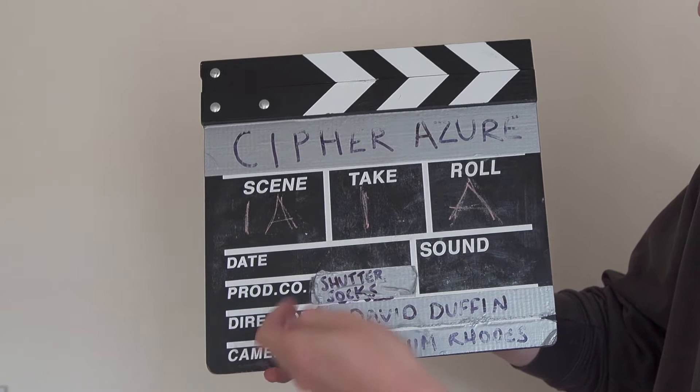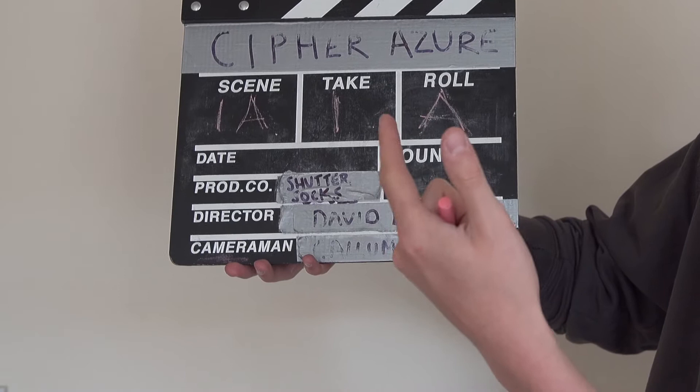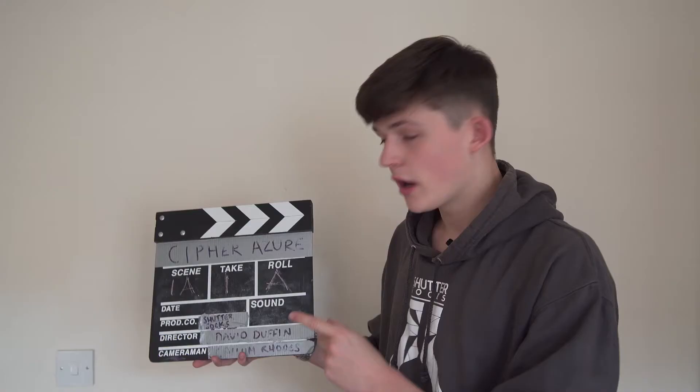Your date — obviously relatively straightforward. Your production company doesn't always tend to be on a slate, but in this case, Shutter Socks — when we made Cipher Is Yore, so we wrote that. The director for the film was David Duffin, and our cameraman was Callum Rhodes. And then obviously at the top you would write the film that you're making — in this case, obviously ours was Cipher Is Yore.